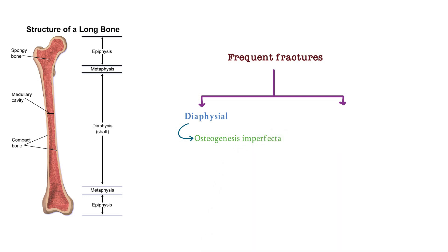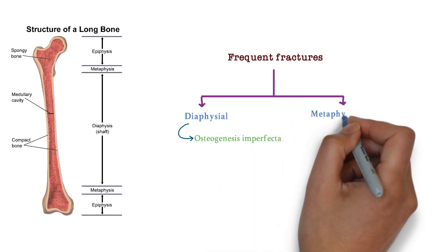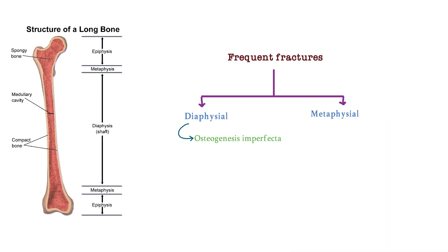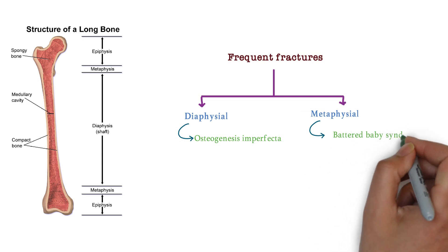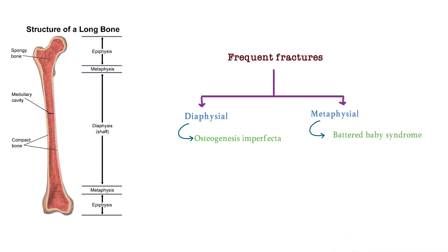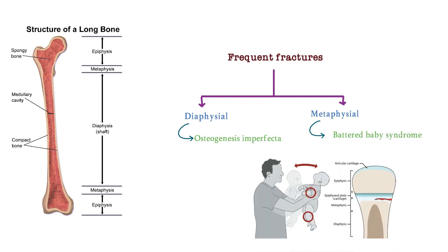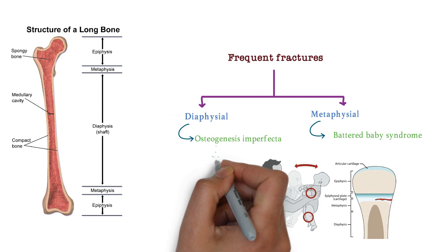But if frequent fractures are found in the metaphysis, the answer is battered baby syndrome. It is a type of physical abuse to the child. Other findings include subdural hematoma, failure to thrive, and soft tissue swelling — these are the features of battered baby syndrome. So metaphysis fractures point to battered baby syndrome, and diaphysis fractures point to osteogenesis imperfecta, which involves brittle bones.